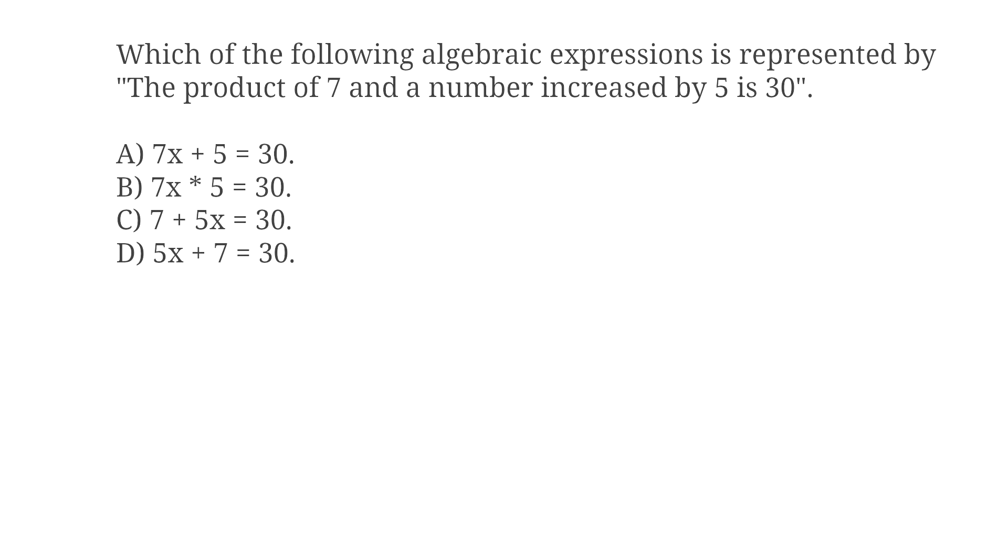Which of the following algebraic expressions is represented by: The product of 7 and a number increased by 5 is 30? A) 7x + 5 = 30, B) 7x × 5 = 30, C) 7 + 5x = 30, D) 5x + 7 = 30.